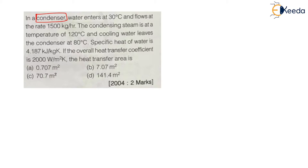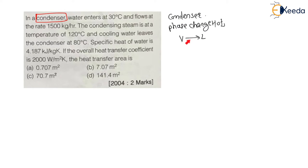If I draw here a condenser: condenser involves a phase change of the hot fluid from vapor state to liquid state. Whenever there is a phase change of any one fluid — either hot fluid or cold fluid — then the parallel flow heat exchanger becomes equal to counter flow. So whether you are using parallel flow or counter flow, that is absolutely fine; the result given by parallel and counter will be exactly the same.